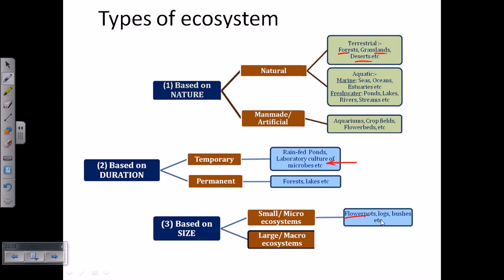As you can see, flower pots are very small. Large ecosystem examples include oceans, deserts, forests. So if you look at the natural ecosystem, most of the time they are permanent and they are large. So these are the properties of natural ecosystems.